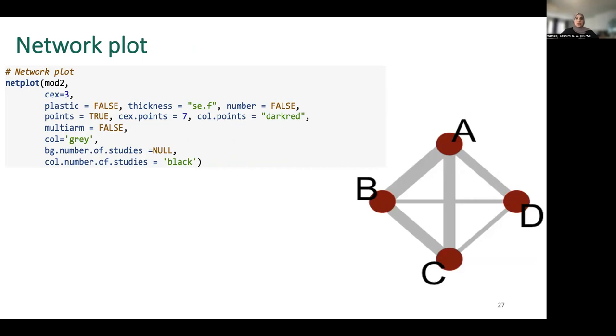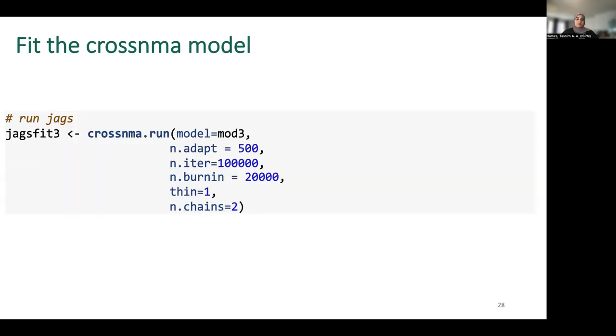You can also plot the network using the netplot function. You could pass to this function different arguments to control the colors, the thickness, and many other features, which are very similar to the netgraph function from netmeta package. Then you can fit the model using the cross NMA run function. It takes the model we created using the cross NMA model, and you need to set the settings for MCMC samples, iteration, burn-in, et cetera.